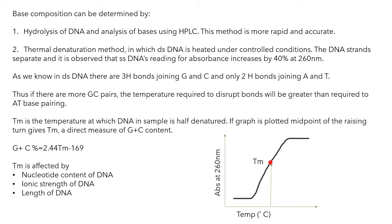TM is the melting temperature, the temperature at which DNA in the sample is half denatured. You can see a slope in the graph - the midpoint plotted on the graph of the raising turn gives TM and a direct measure of GC content. You can use that value and use this equation to get your GC content.